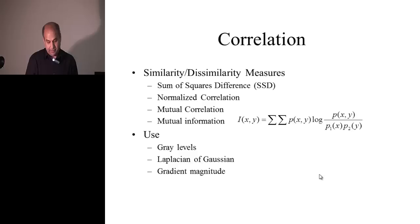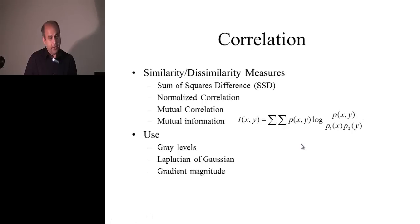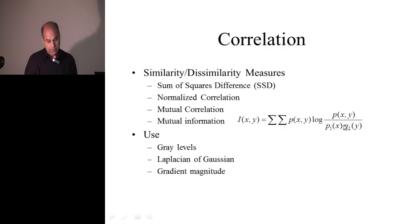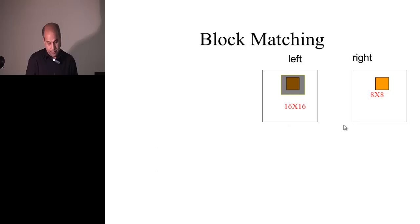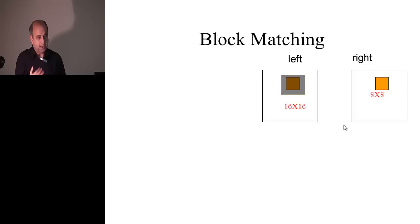Another measure is mutual information, where you look at the distribution and joint distribution of both windows, find the marginal distributions for each, and measure how much mutual information exists between them. This is a well-established approach that has been known for more than 50 years and is used in many applications.